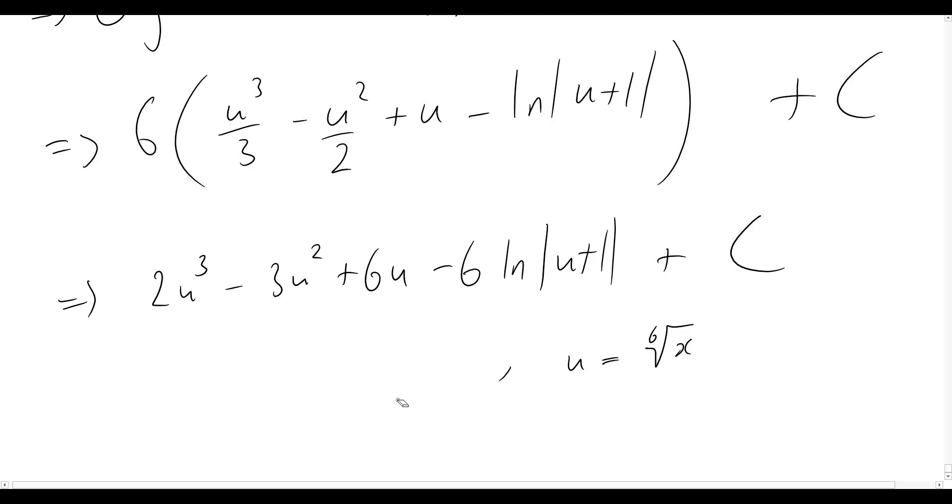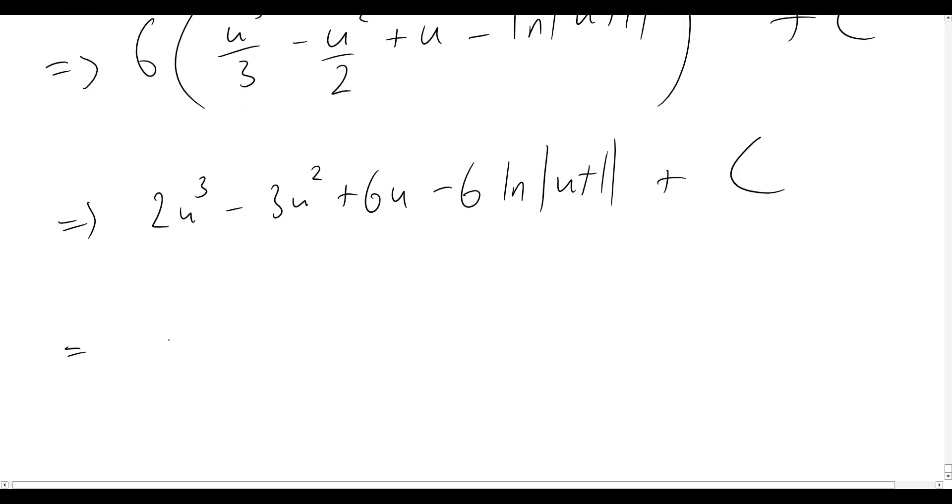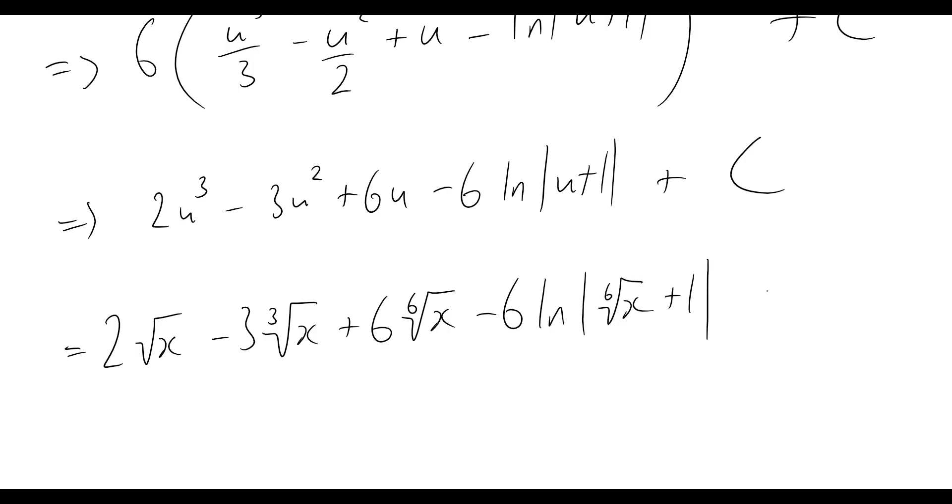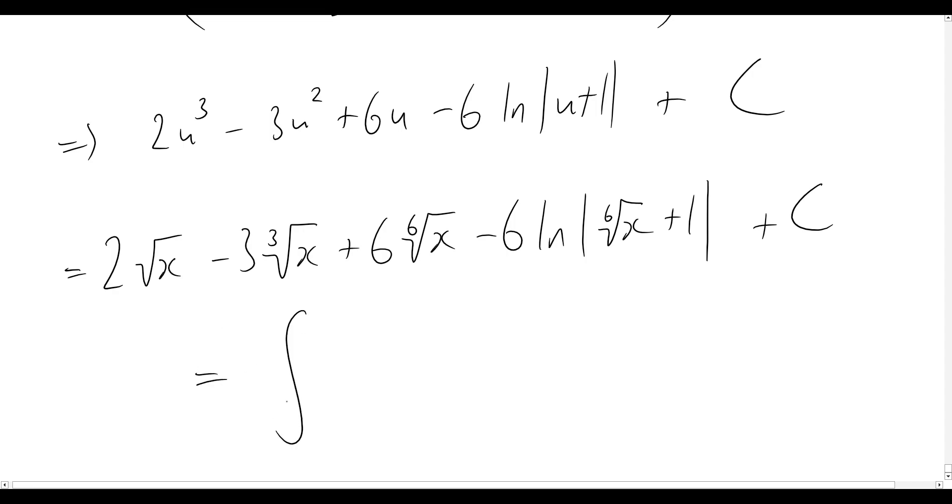So let's start doing that now. If u is equal to the sixth root of x let's see what happens here. So this would then become for our final answer we would now have two square root x minus three cube root x plus six times the sixth root of x minus six natural log of the sixth root of x plus one plus c, some constant term there. And that's it. And so that is equal to the integral of one over the square root of x plus the cube root of x dx.